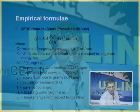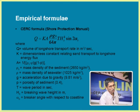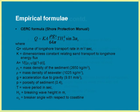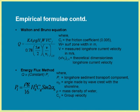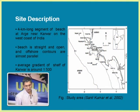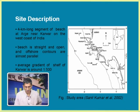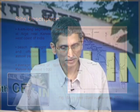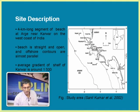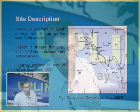As I mentioned, traditionally there are certain formulae which the design codes recommend. One is a regression formula given by the Coastal Engineering Research Manual. Another one is the Walter and Bruno Equation. The third one is the Energy Flux Method. They all relate the outcome to the causative variables in an empirical manner. We have collected data — one of the co-authors of this paper collected data along the coast of Karwar. This is that Arge Beach, a 4-kilometer long coast.